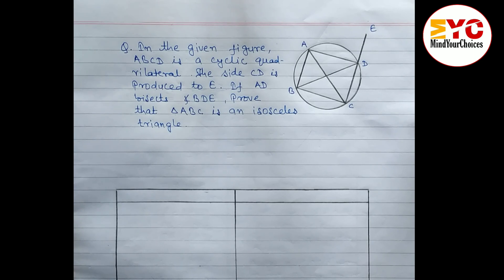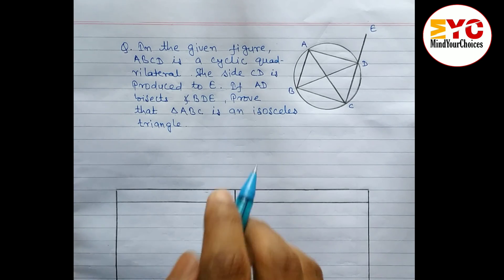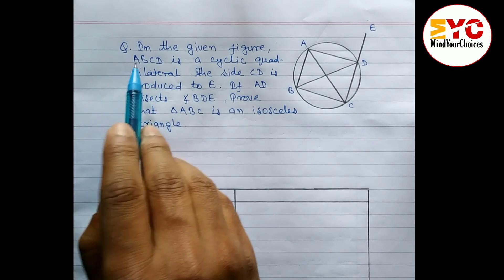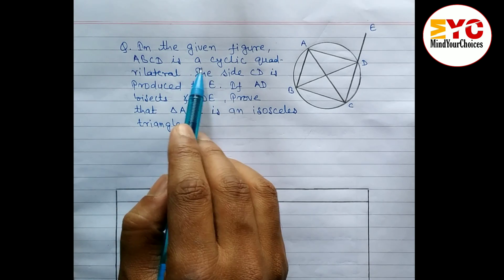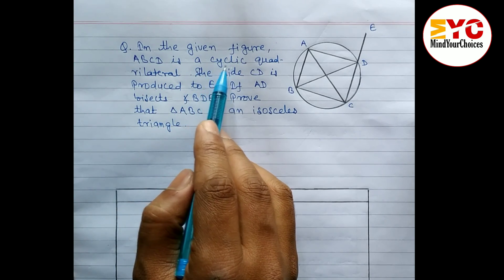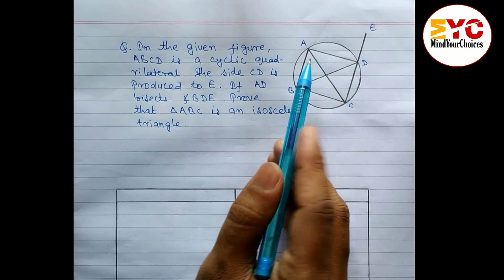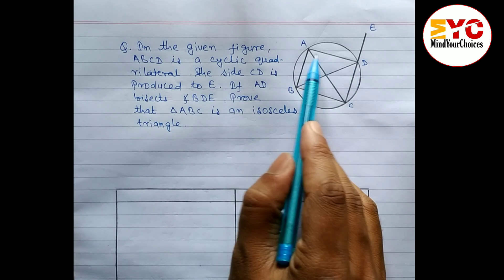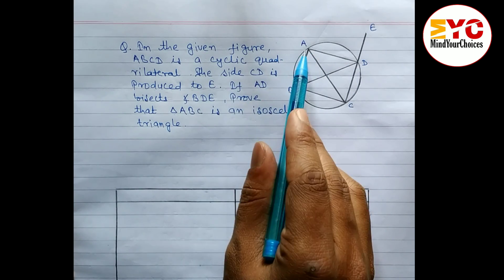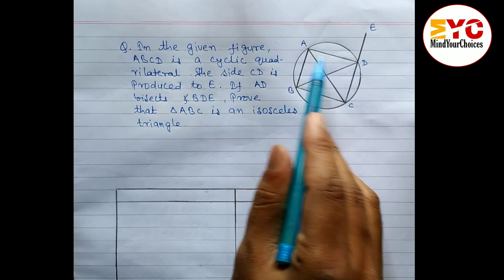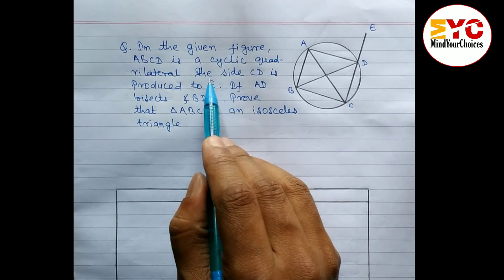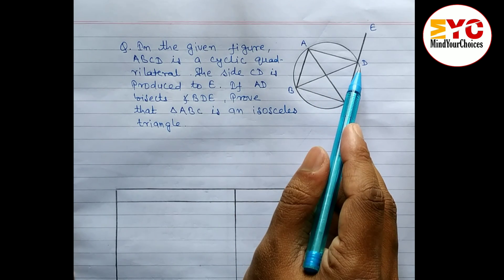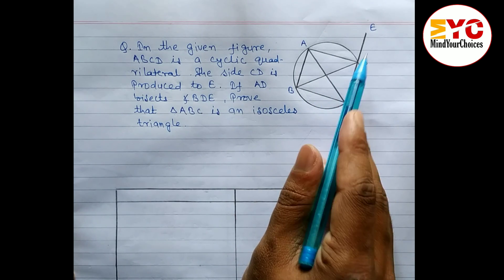This question is taken from circles. In the given figure, ABCD is a cyclic quadrilateral — all four points lie on the circumference. The side CD is produced up to E.